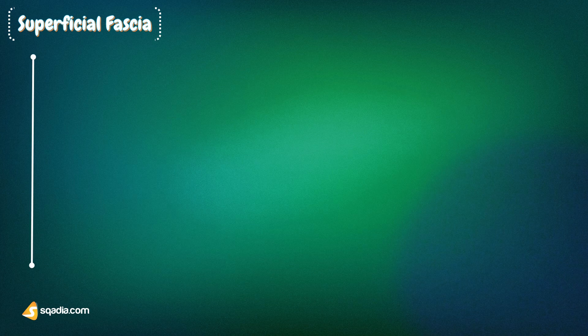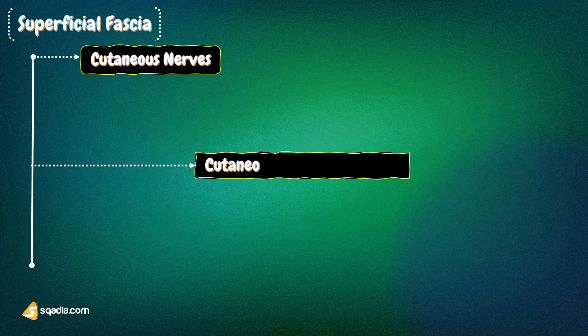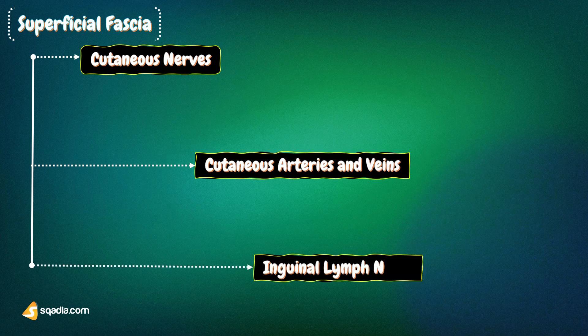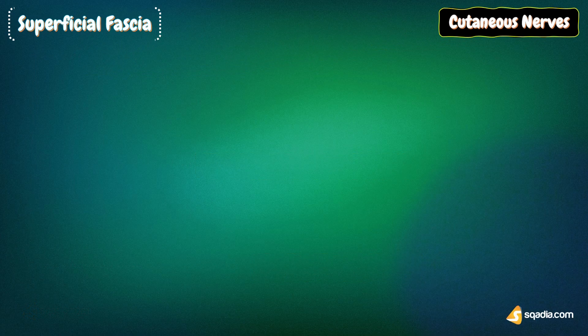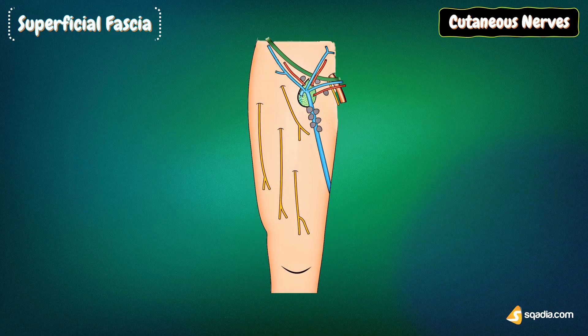The superficial fascia contains cutaneous nerves, cutaneous arteries, the great saphenous vein and its tributaries, and the superficial inguinal lymph nodes. We will discuss the cutaneous nerve supply first. The skin of the front of the thigh is supplied by the following cutaneous nerves derived directly or indirectly from the lumbar plexus.